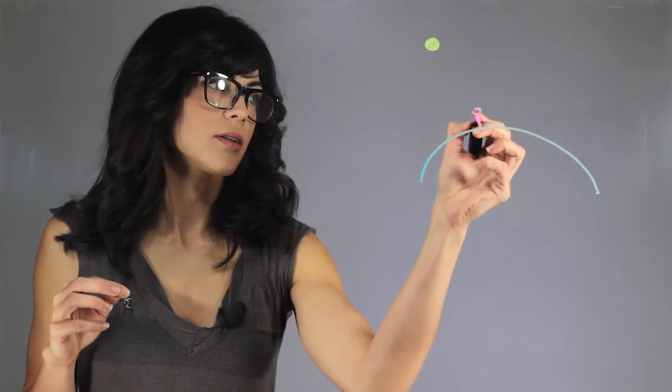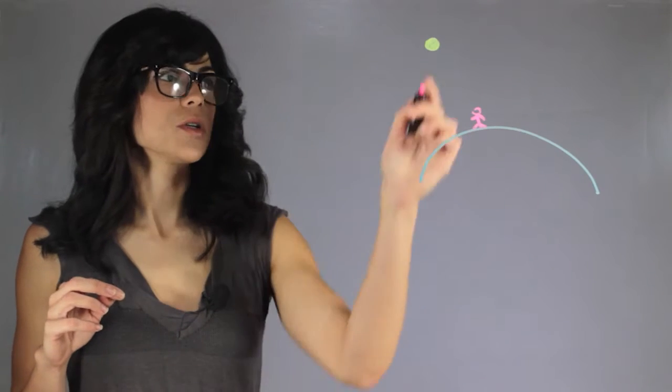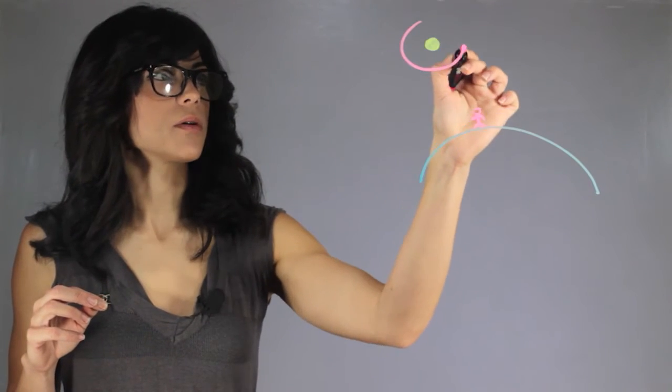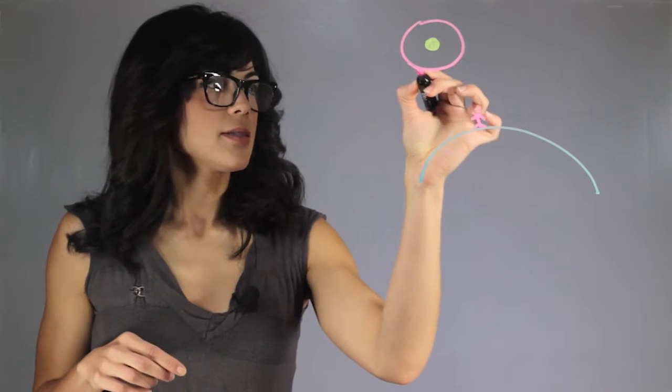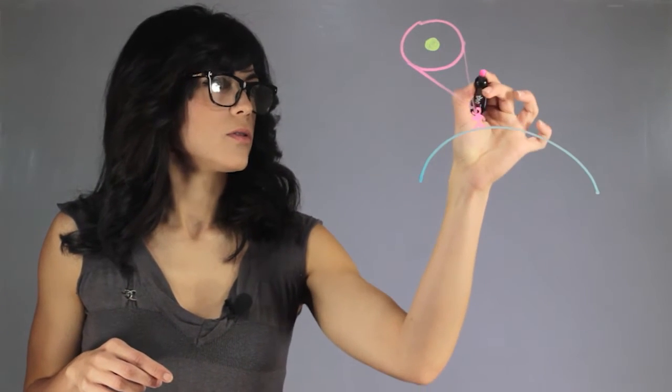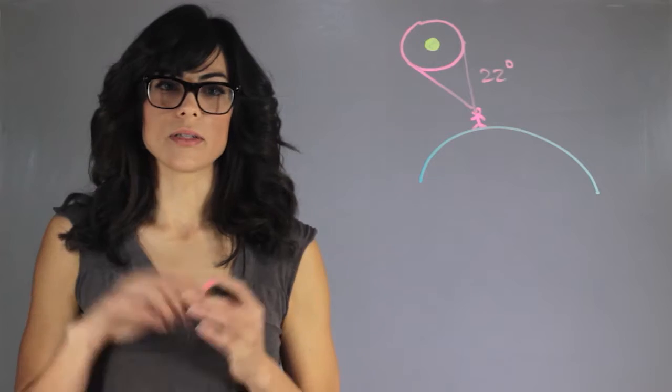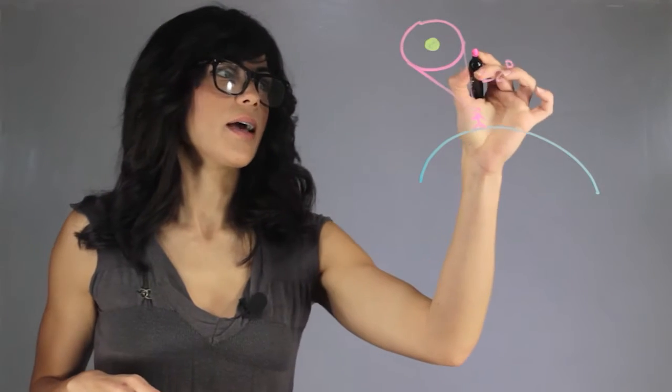So sometimes when you look at the moon from Earth, you're standing on the surface, and you look at the moon and you see this sort of ring around it. It's just a ring of light. This is actually about 22 angular degrees in the sky and this is called the halo.